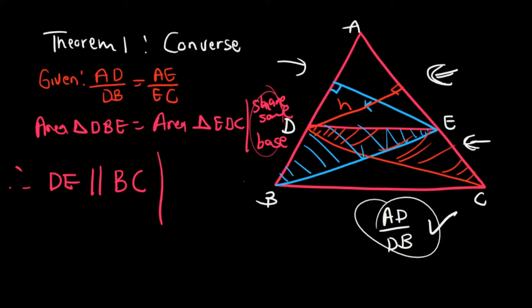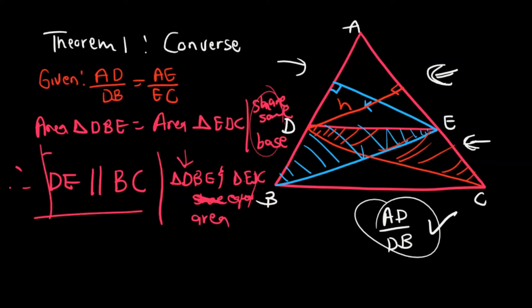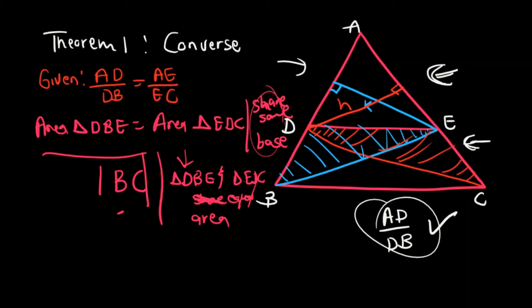The reason you state is that triangles DBE and EDC share the same base and have equal areas. Therefore DE is parallel to BC. We have completed the proof of the converse of Theorem 1.